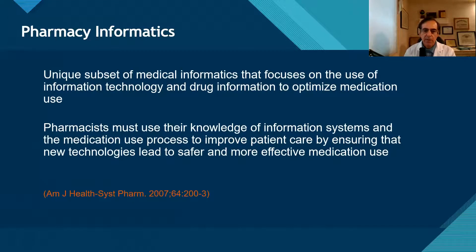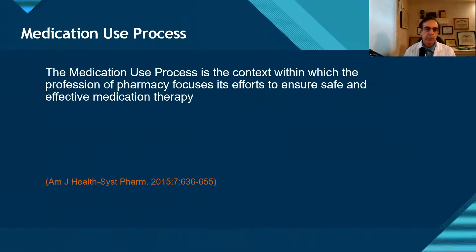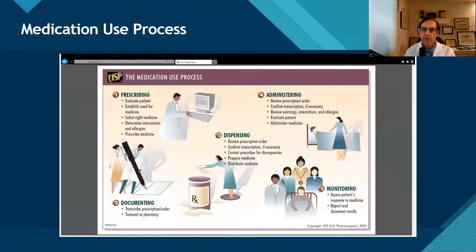Pharmacists must use their knowledge of information systems and the medication use process to improve patient care by ensuring that new technologies lead to safer and more effective medication use. We want to make the pharmacy department and the pharmacist more efficient in their work, and that's going to lead to safer and more effective medication use. So let's talk about the medication use process — it's really about the life cycle of a prescription or medication order, starting with prescribing, documenting, dispensing, and then administering and monitoring.